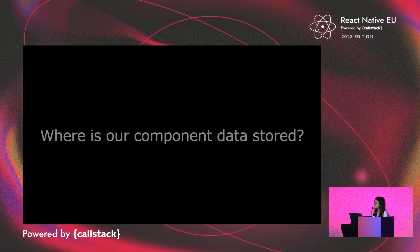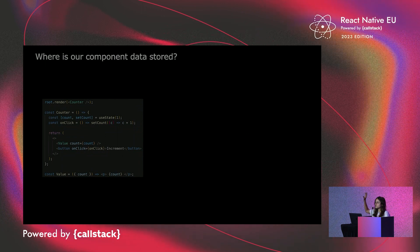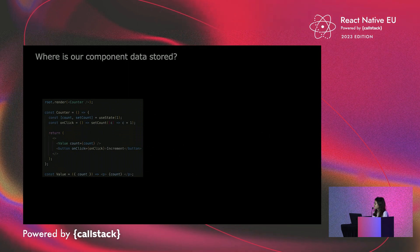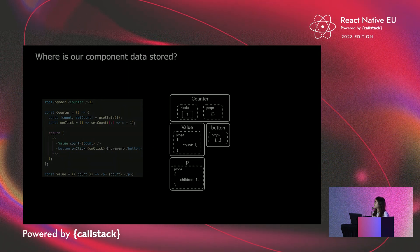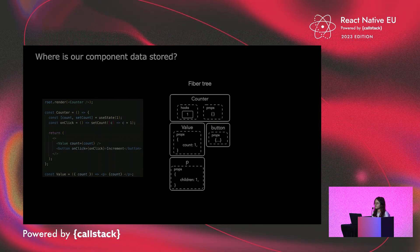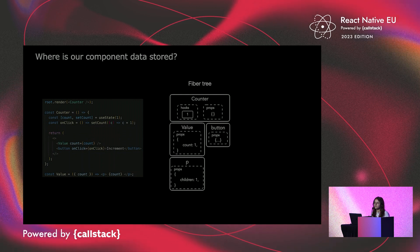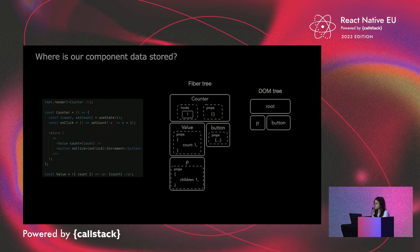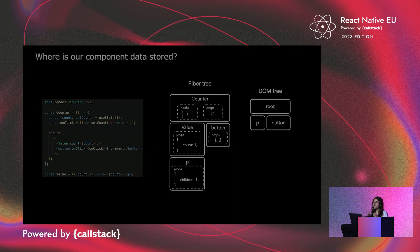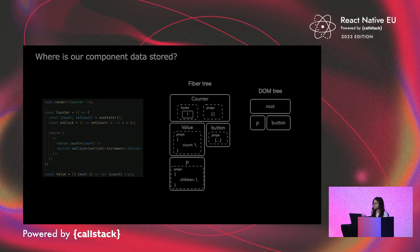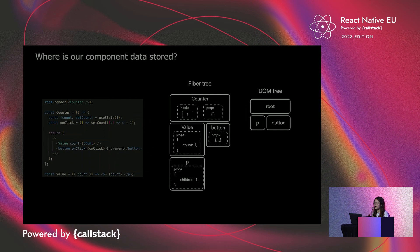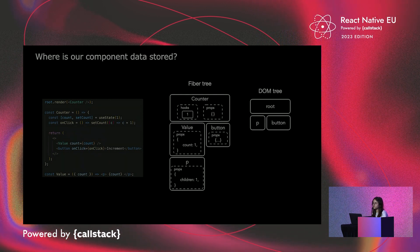Where is our component's data stored? We'll be using a simple counter example throughout this entire presentation that displays a counter value along with a button to increment it. When we first run our app, React creates a virtual tree made of our React components. This tree is called the fiber tree. The fiber tree holds all of the components that make up our app. From this virtual tree, React is going to inject our HTML elements into the DOM to display our application on the screen. The fiber tree keeps in memory, through time and renders, information about our components — their data, their props, and their states. This way, whenever a render happens, React knows which component may have changed and which one it should render.